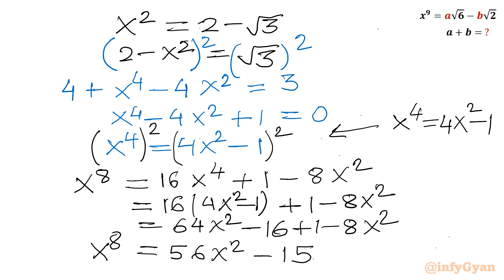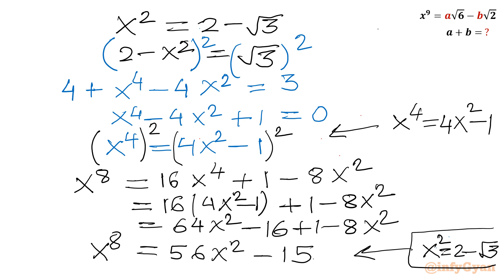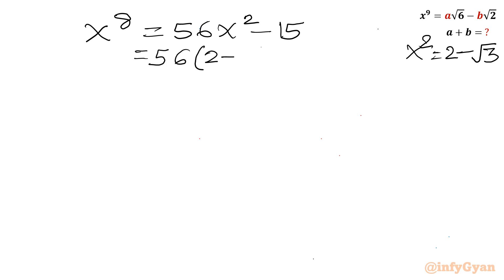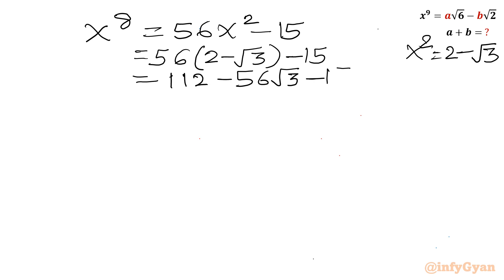Now I will apply the value of x squared. Because x squared was 2 minus root 3, if you remember, let us apply here. So x to the power 8 is equal to 56x squared minus 15, and x squared was 2 minus square root 3. Applying: 56 times (2 minus root 3) minus 15. 56 times 2 is 112, minus 56 root 3, minus 15. 112 minus 15 is 97. So x to the power 8 equals 97 minus 56 root 3.